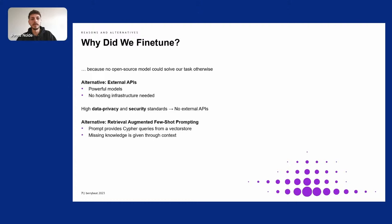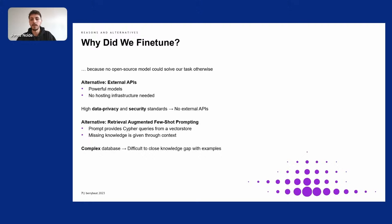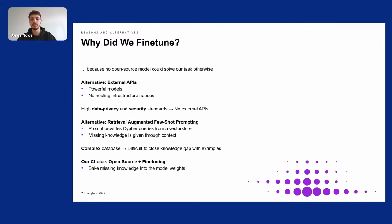Another option to fine-tuning would be retrieval-augmented few-shot prompting. This works by including correct question-query pairs into the prompt, which are retrieved from a vector store based on the asked question. However, our database is very complex and it's very difficult to teach all the missing information through just a few examples. So we figured out that our best option was fine-tuning, where we baked the missing knowledge into the model weights through training.